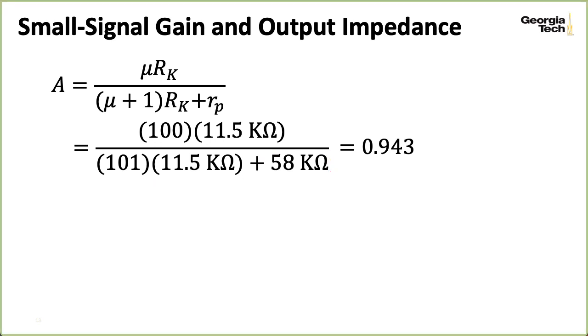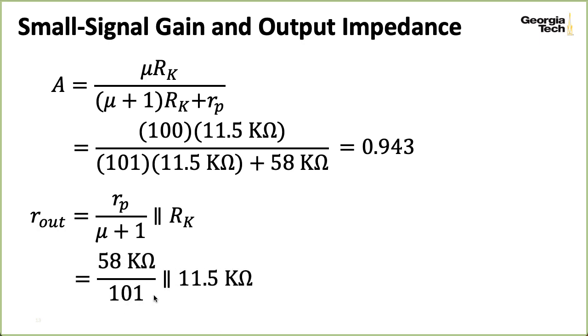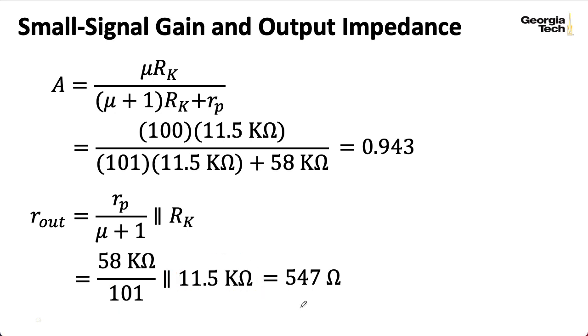We can similarly just plug in values for the expression we computed in the last lecture for the output impedance. This gives me 58 kilo ohms over 101 in parallel with 11.5 kilo ohm. And it's this magical division by 101 that makes the output impedance so amazing. You get a very small quantity here and basically this in parallel is relatively irrelevant. And just look at how wonderfully low that output impedance is. Isn't that glorious? Anyway, one other thing I wanted to mention is that if we did have an RL, it would show up here. But it's zero in this particular instance, so we don't need to worry about it.